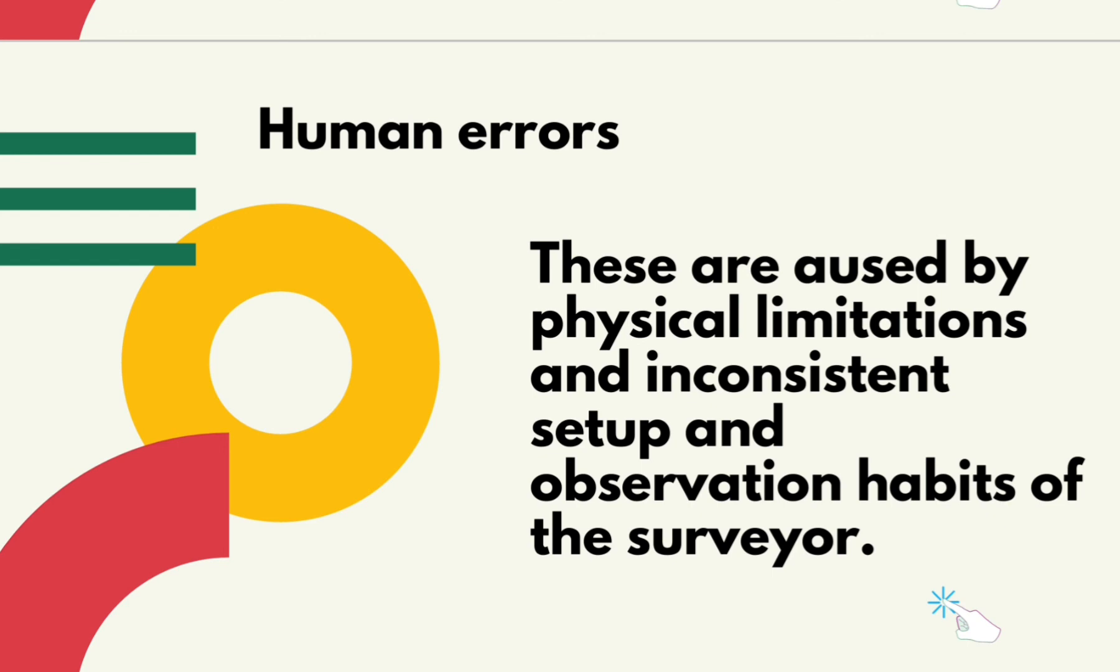Human errors are caused by physical limitations and inconsistent setup and observation habits of the surveyor. For example, minor errors result from misaligning the telescope crosshairs on the target or not holding the target rod perfectly plumb. These errors will always be present to some degree in every observation. However, by following established setup and collection procedures, many potential errors can be minimized.